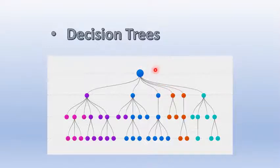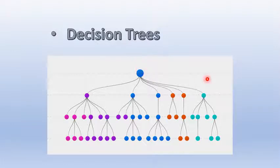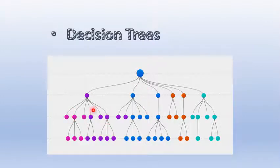Here is the basic decision tree. Let's start with this node. We are going to show you the root node and different nodes. This is a decision.